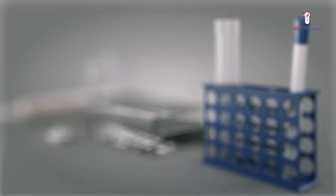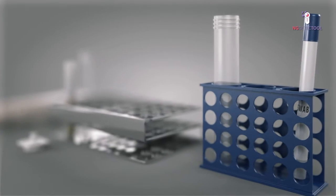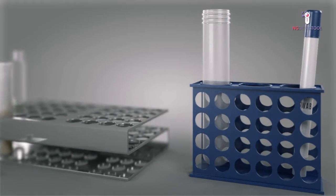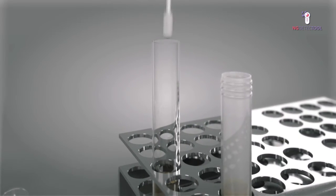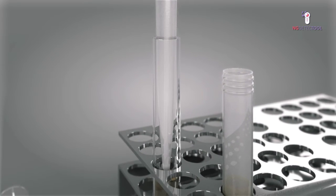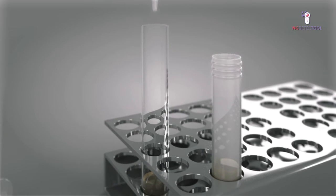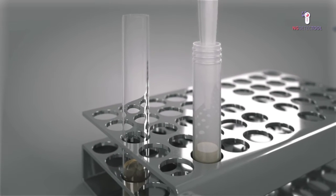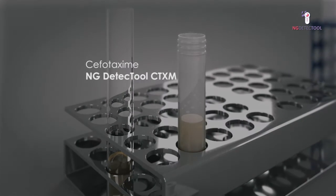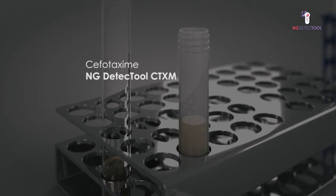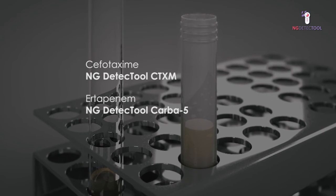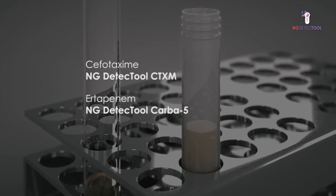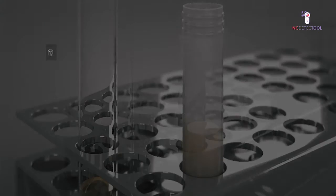When working with rectal swabs, enrichment of the sample is needed prior to the use of the device. Inoculate the rectal swab in 1 milliliter of transport medium. Transfer 400 microliters of this solution to 4 milliliters of brain heart infusion media supplemented with ceftotaxime for ESBL detection using NG-Detect tool CTX-M, and ertapenem for carbapenemase detection using NG-Detect tool CARBA-5, and incubate overnight.